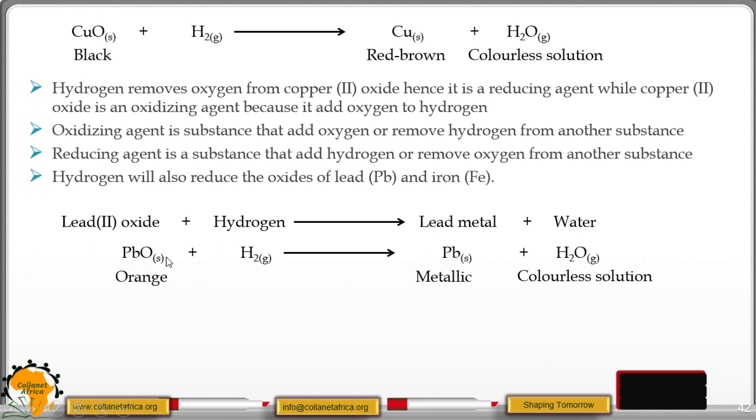Lead oxide is orange color. That's the chemical formula for lead oxide. Hydrogen gas is colorless. This will give a metallic luster. Then we have a colorless solution, which is our water.